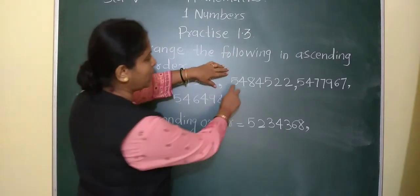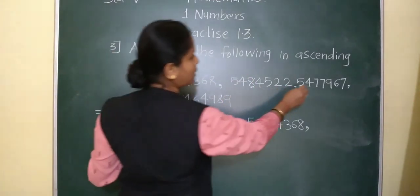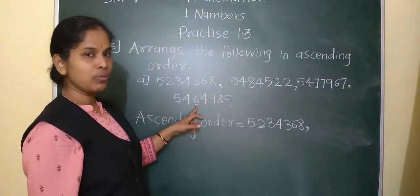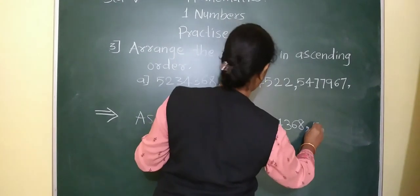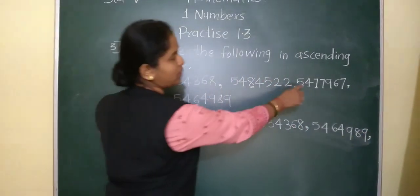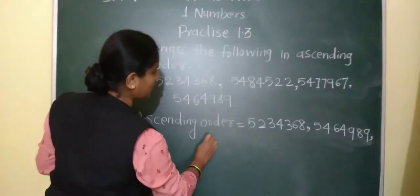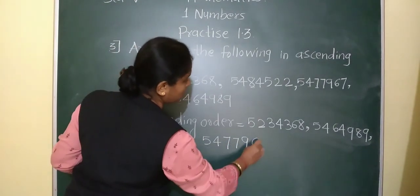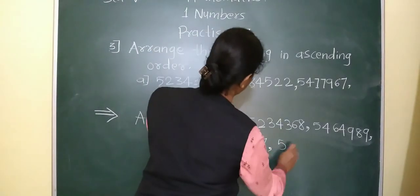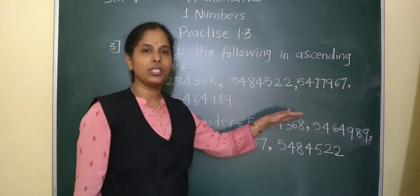Now for the remaining three numbers, the first two digits are the same, so we compare the third digit: here 8, here 7, and here 6. The smallest is 6, so that number comes at the second place. After that, 7 is next and 8 is the biggest. So we arrange them from smallest to biggest in this way.